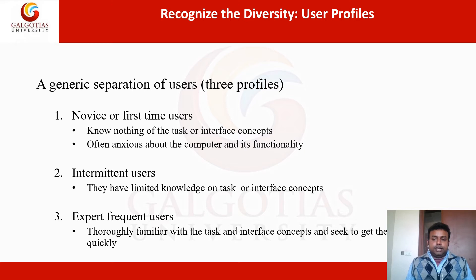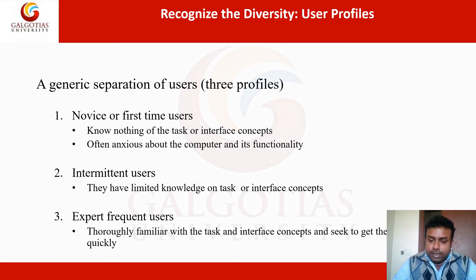The next category is intermediate users. They have limited knowledge of the tasks or the interface concept. They are not first-time users but also not master users — they have used these things but have a little bit of knowledge. Expert users are thoroughly familiar with the tasks and the interface concept. They can perform assigned tasks quickly. People who work with software daily, like software developers, are frequent or expert users — they have mastery and control, and can do their job very fast.